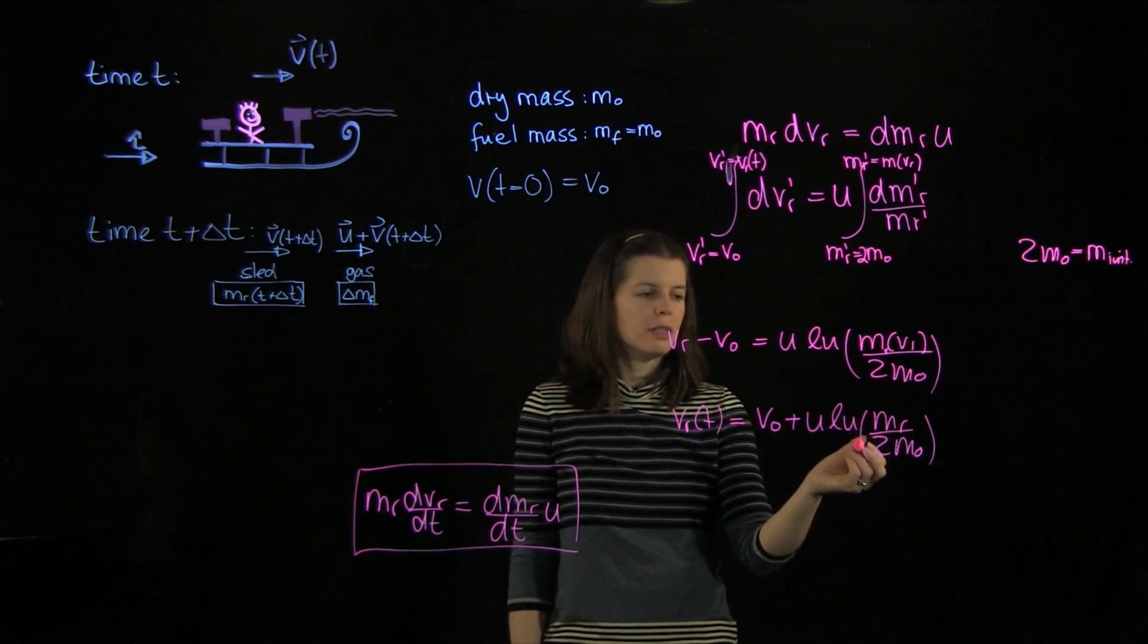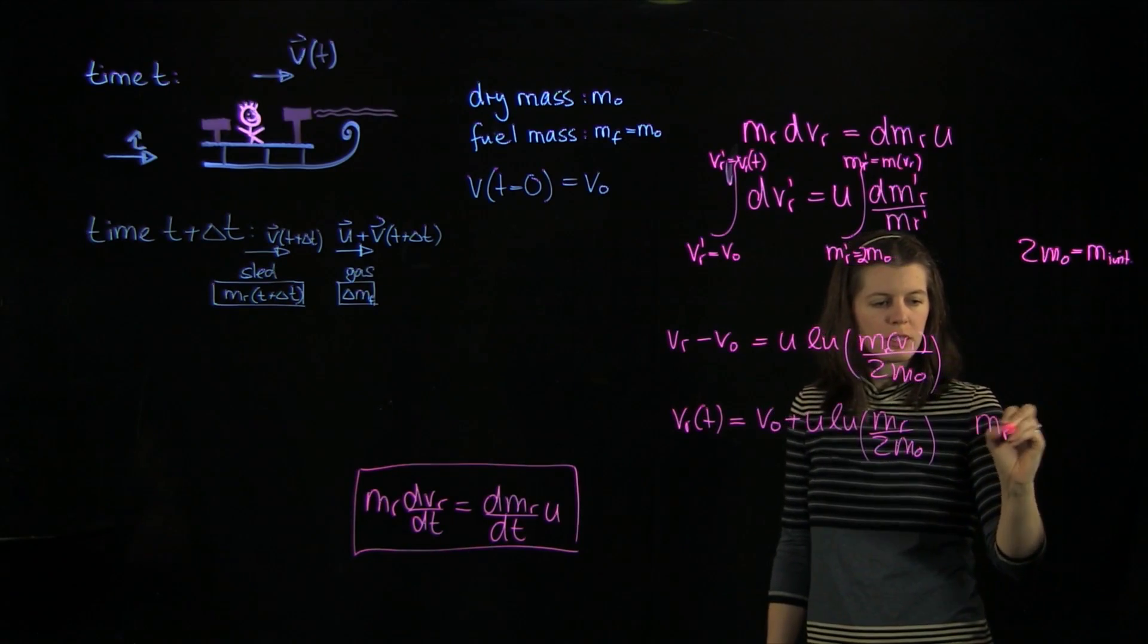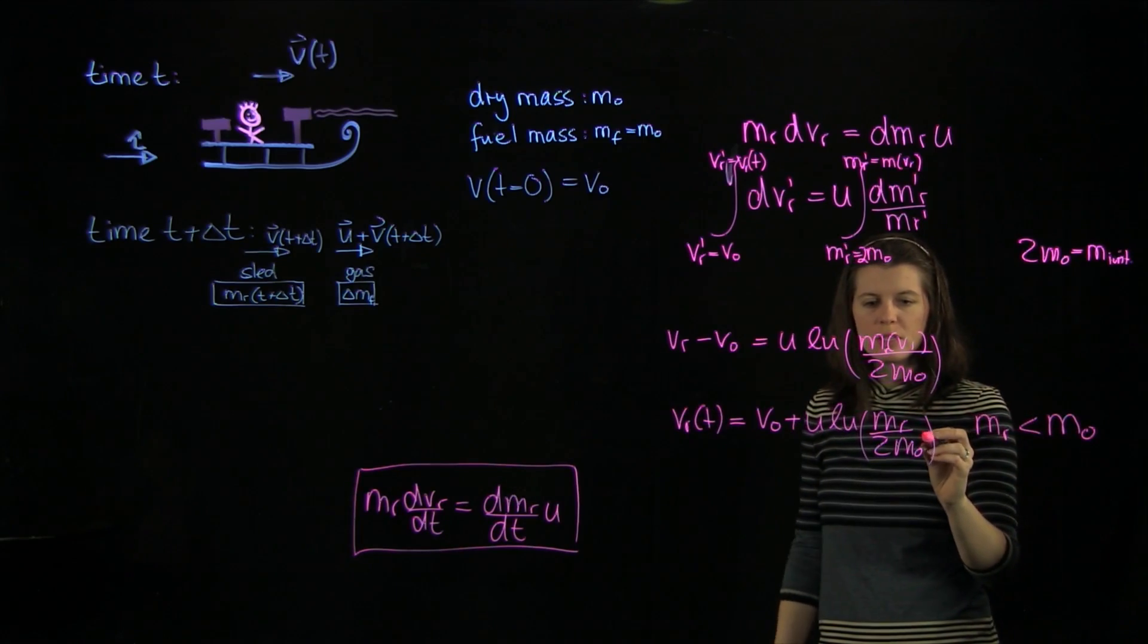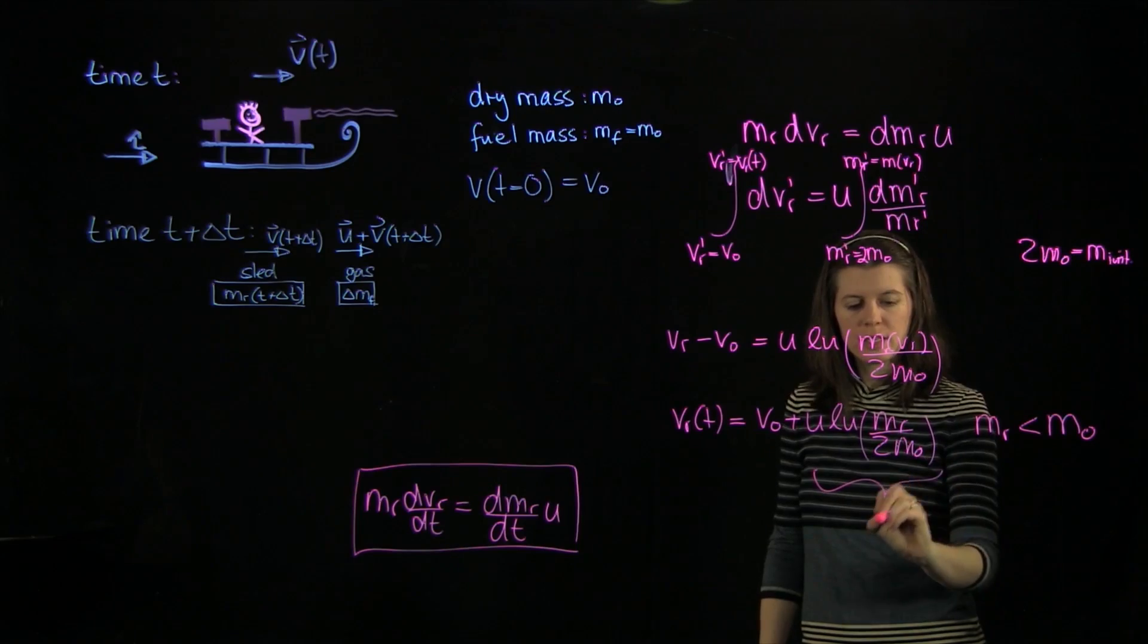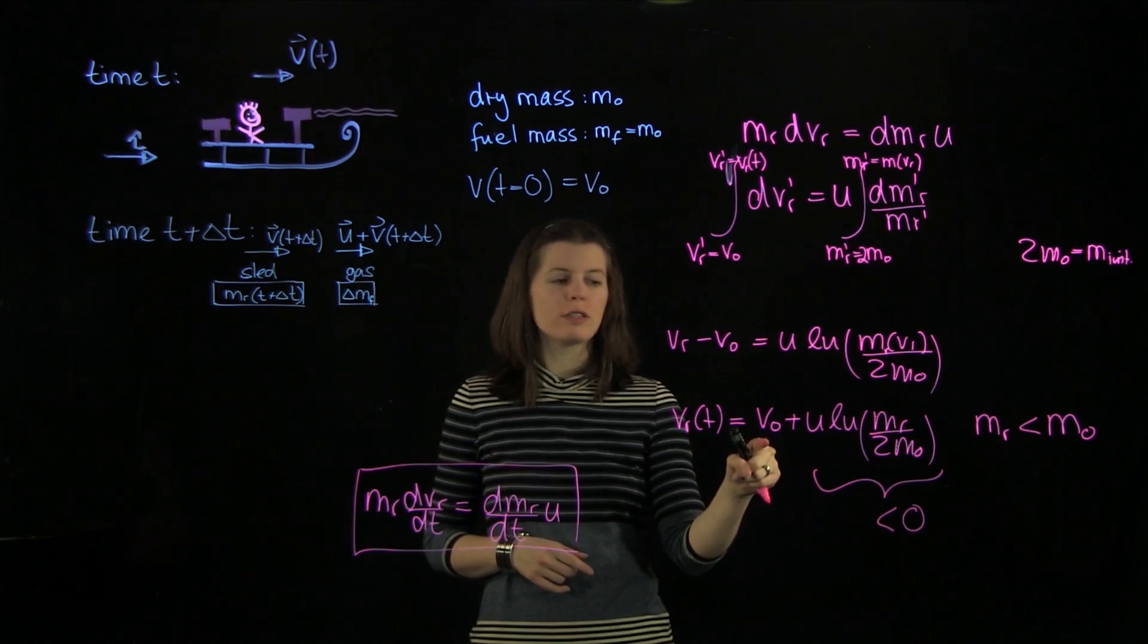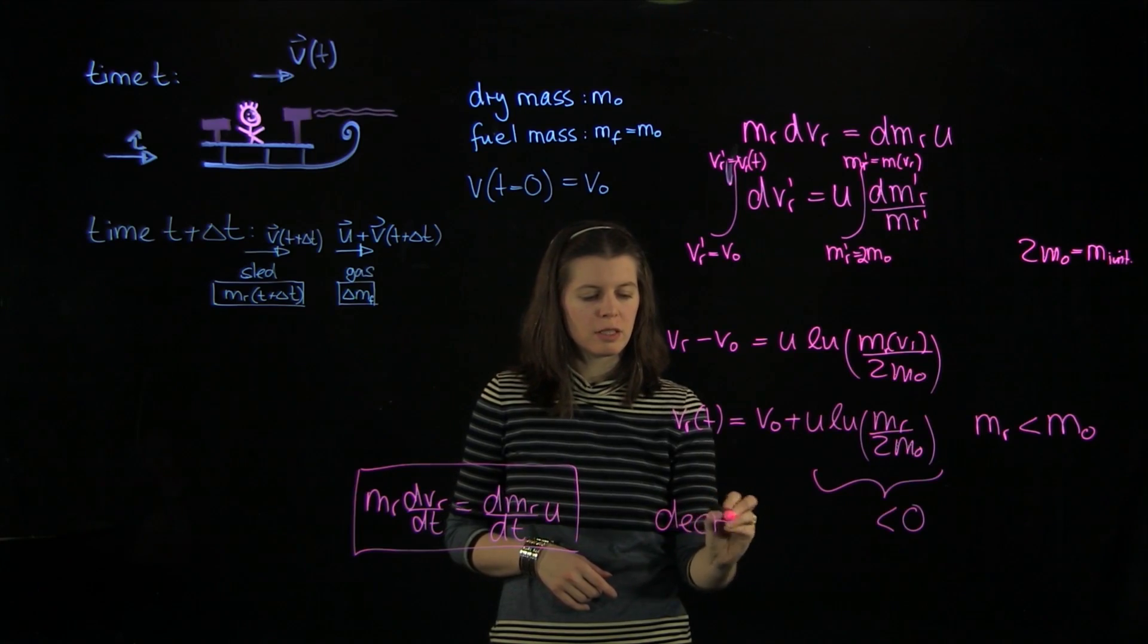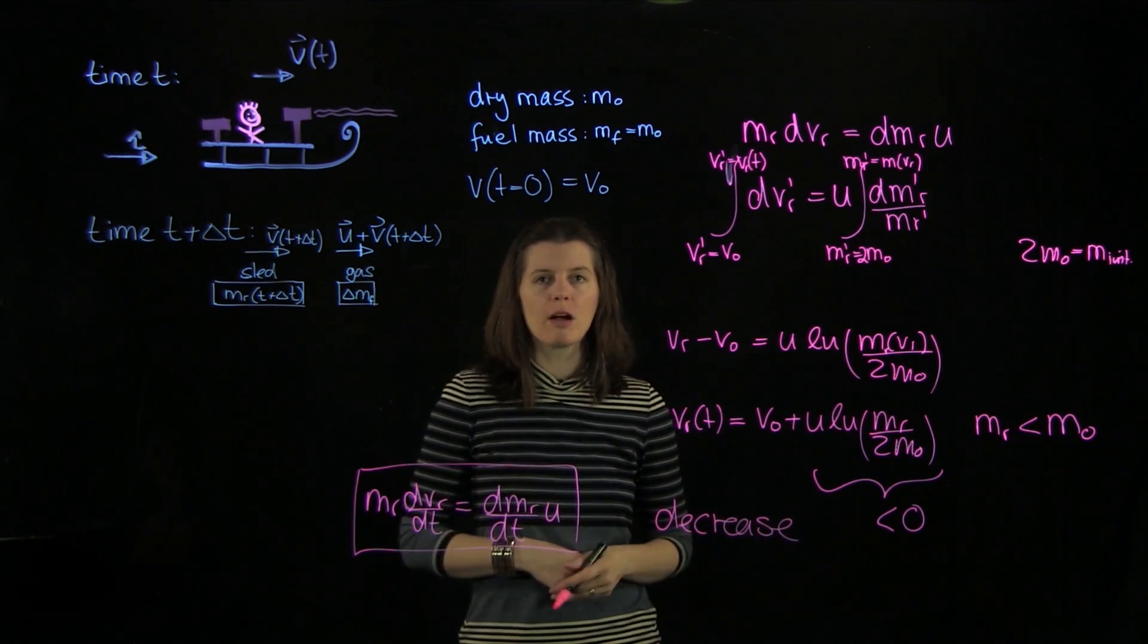So what does this equation tell us? mr, the mass of the rocket, is less later on than it was before, which means this term here is going to be less than 0, which means the velocity is our initial velocity minus something, which means we have a decrease in velocity, which means my sled will eventually come to a stop.